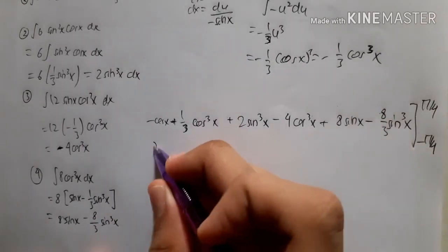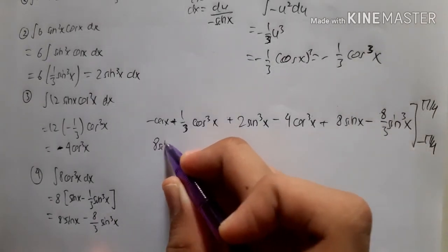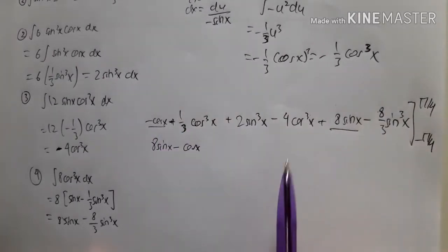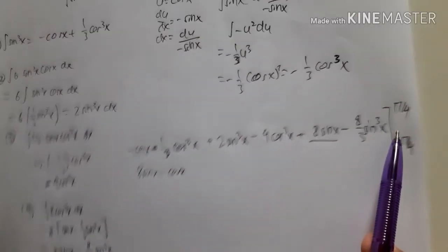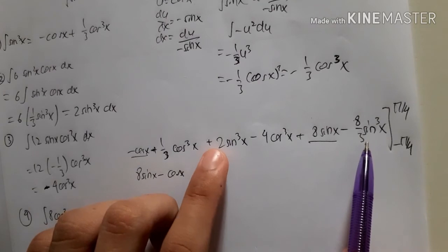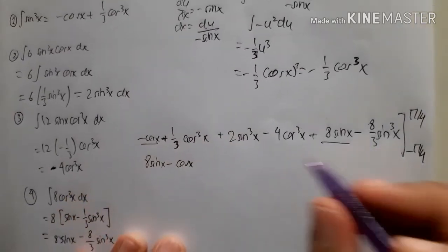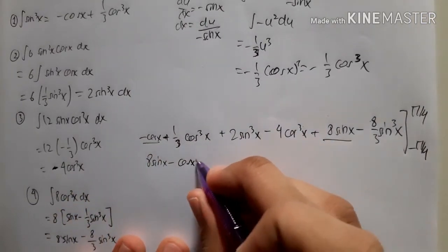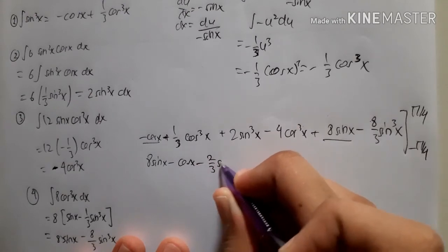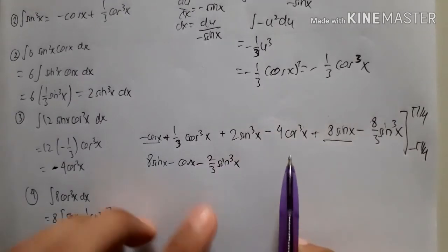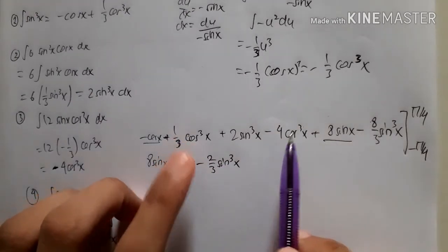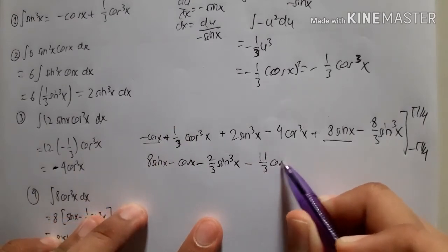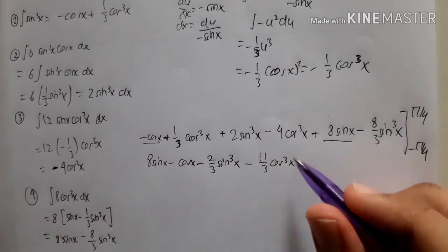We tidy up by grouping like terms. The sin x term: 8sin x. The sin³x terms: 2 − 8/3 = 6/3 − 8/3 = −2/3, so −(2/3)sin³x. The cos x term: −cos x. The cos³x terms: 1/3 − 4 = 1/3 − 12/3 = −11/3, so −(11/3)cos³x.